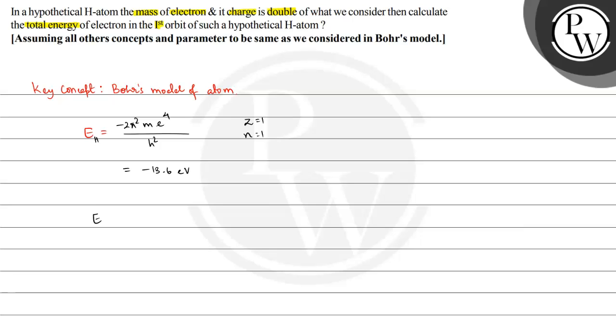to calculate with the modified values. Let us name it as E'_H. This equals minus 2π² m, but we'll put 2m because mass of electron is doubled. So 2m multiplied by charge of electron, which is also doubled, so (2e)⁴ divided by h². This equals minus 2π² multiplied by